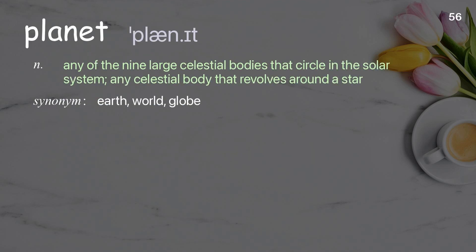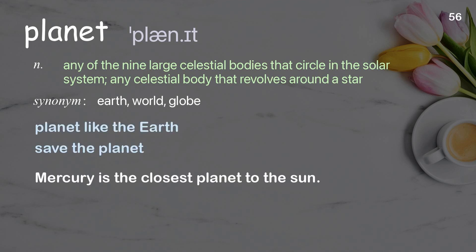Planet: Any of the nine large celestial bodies that circle in the solar system; any celestial body that revolves around a star. Examples: planet like the Earth, save the planet. Mercury is the closest planet to the sun.